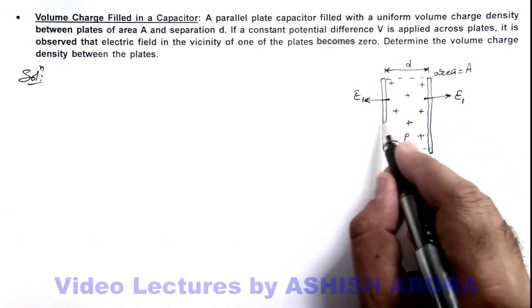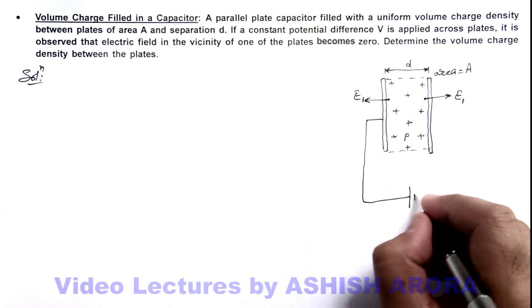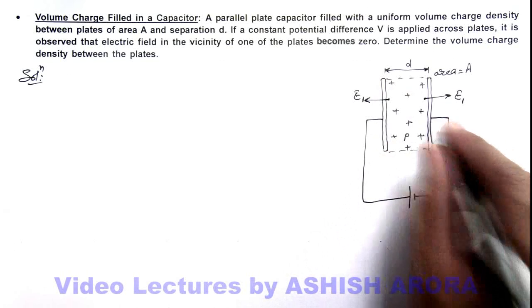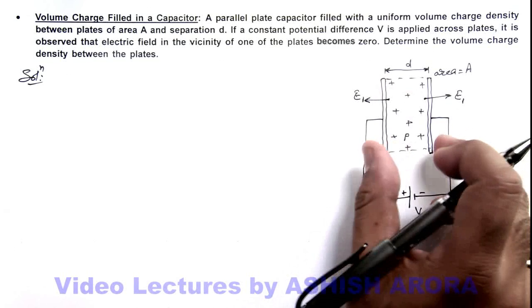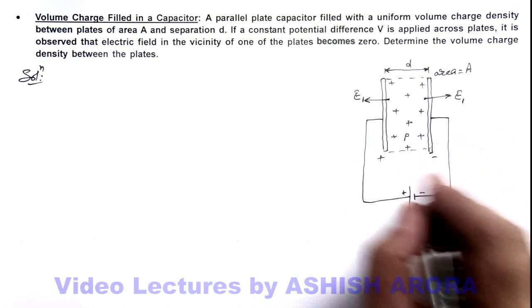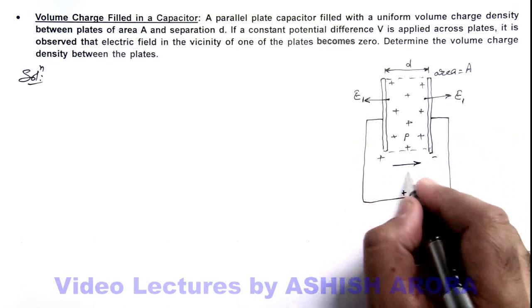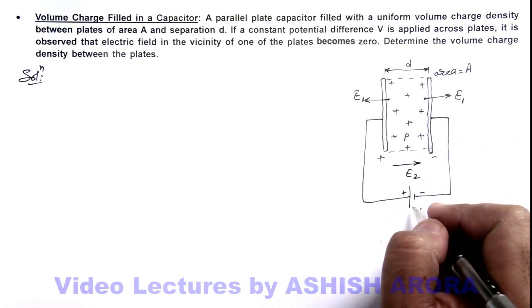We are also given that across the two plates, we have put a potential difference V. Due to this potential difference which is applied across the plates—this is the high potential plate, this is the low potential plate—another electric field E₂ will exist between the plates due to the externally applied potential difference.